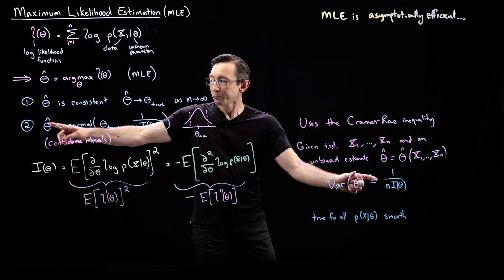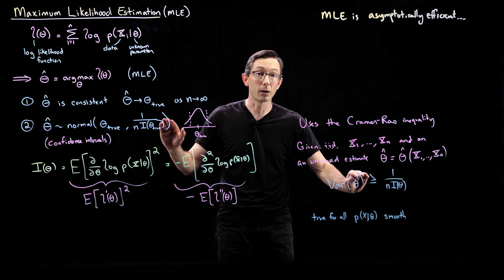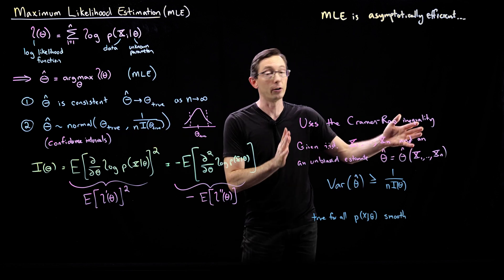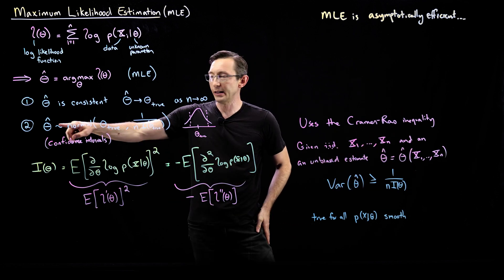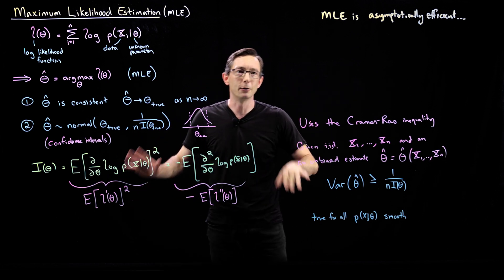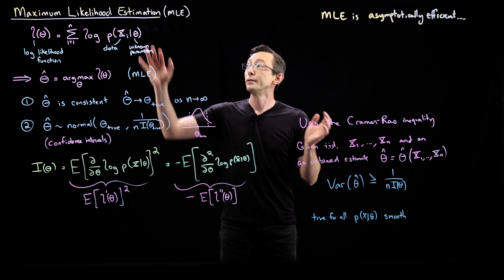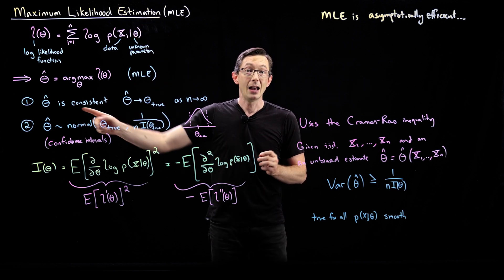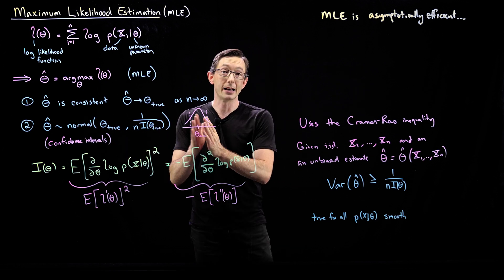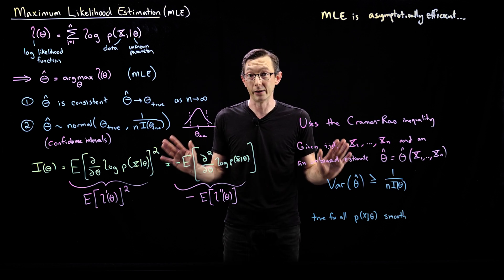Proving all of this is super hard and deriving I of theta is messy — that's all stuff you can look up in textbooks. But I want you to see the big picture: the maximum likelihood estimate is unbiased, it's asymptotically efficient, and you can compute its variance, which allows you to write down confidence intervals for your estimate. These are super useful properties of the maximum likelihood estimator. Thank you.